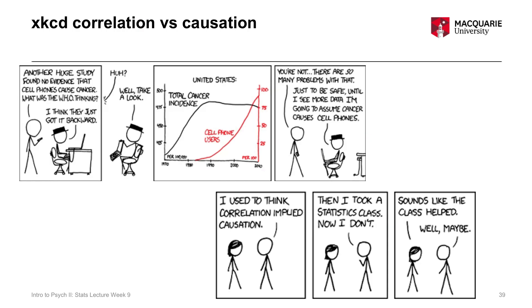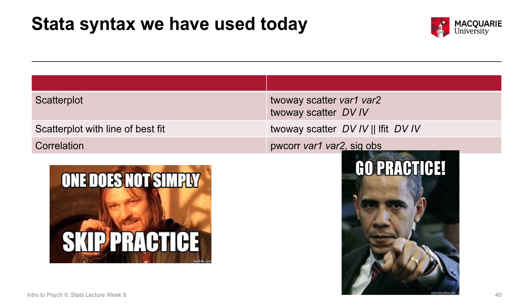The last piece of amusement is two XKCD comics — really great — that I'll encourage you to look at and chuckle at in your own time, demonstrating this whole idea of correlation and causation. In conclusion, we have a couple of new commands we learned today: the scatterplot command, the scatterplot with the line of best fit, and our correlation command — our pwcorr. Those were our Stata commands used to produce our scatterplot and correlation coefficient.